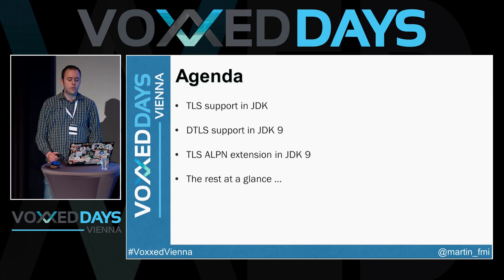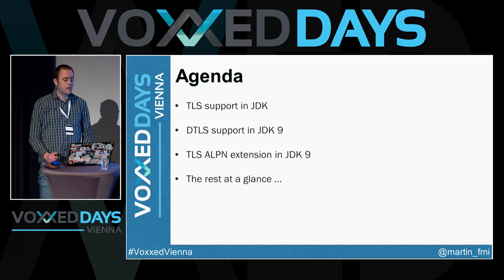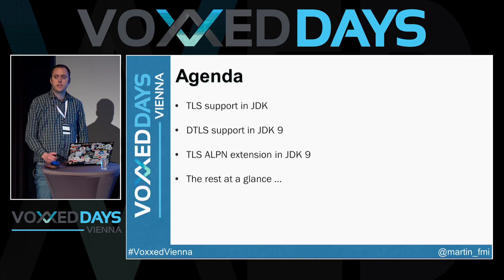In this session we'll first do a short recap on TLS, or Transport Layer Security, support up to JDK 9. Then we'll cover the new security enhancements in Java 9 such as DTLS (Datagram Transport Layer Security), ALPN — a very interesting extension on the TLS handshake protocol — and we'll also review the rest of the security enhancements at a glance.